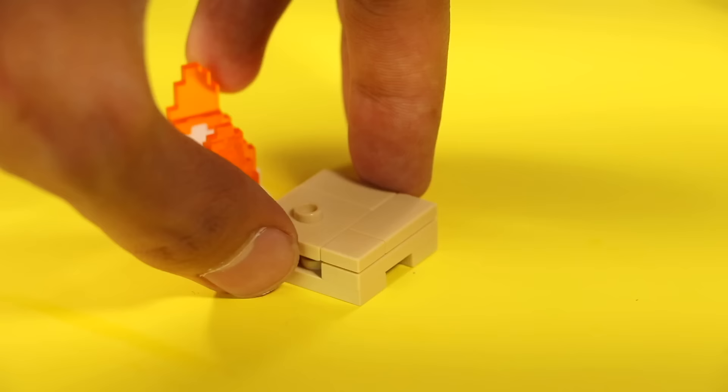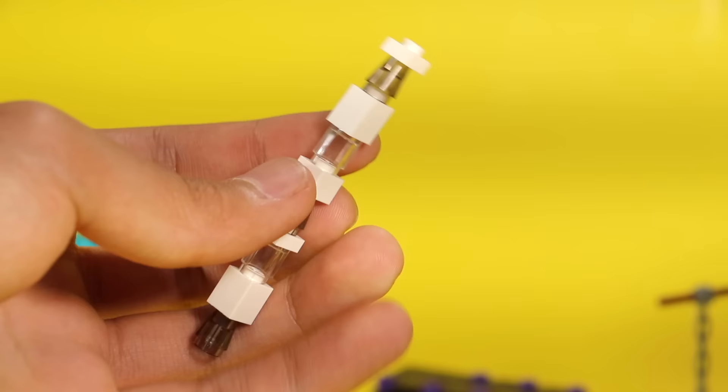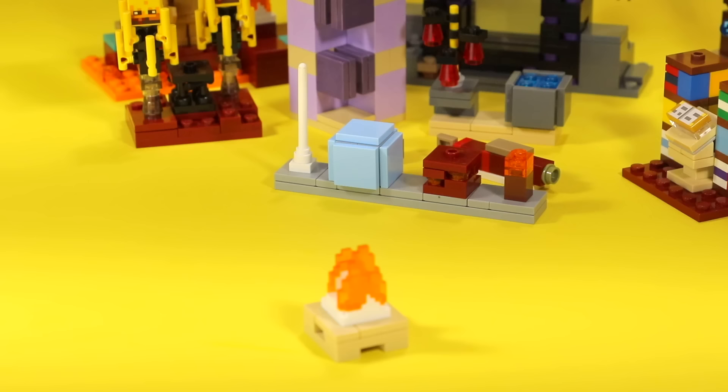If you want to, you can add some smoke. So to do that, just take some transparent bricks, take some white pieces, and kind of pattern them so it looks like smoke clouds are going up.